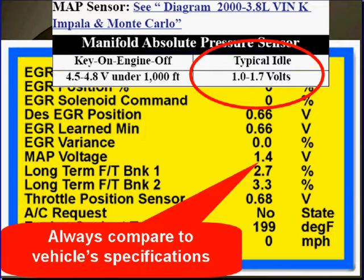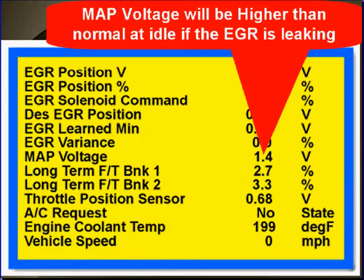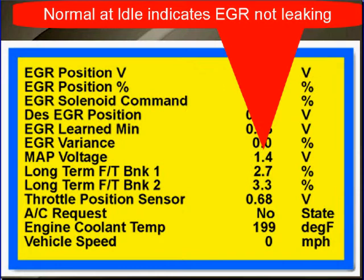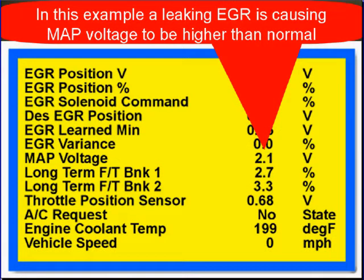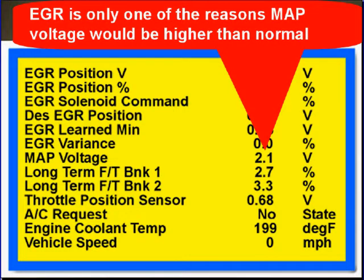Step one: compare scan data to specifications. MAP voltage will be higher than normal at idle if the EGR is leaking. Normal MAP voltage at idle indicates that the EGR is not leaking. That's a big finding — if your MAP voltage is normal at idle, the EGR is not leaking. That's not saying anything about excessive flow when it starts to open, but you know when the MAP voltage is normal at idle, the EGR is not leaking. In this example, a leaking EGR is causing MAP volts to be higher than normal. EGR is only one of the reasons MAP voltage would be higher than normal. Anything that affects manifold vacuum will affect MAP voltage.